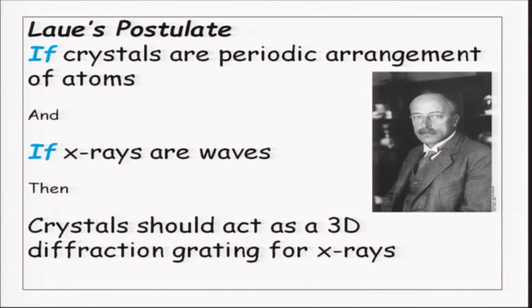Max von Laue then came into the picture, and he postulated that if crystals are periodic arrangement of atoms. Remember Hooke and Kepler and others have already postulated that crystals' external shape is because of regular arrangement of internal building blocks, and now people were started thinking of atoms also. It started becoming clear that there is a regular internal arrangement of atoms which give the crystal nice shape.